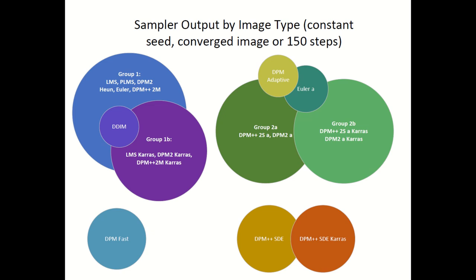DDIM was slightly strange as it could result in either a group 1 or group 1b output. Group 2 is a bit more varied. Group 2a and group 2b are mostly distinct, but can have the same output. Euler A and DPM Adaptive, like DDIM, are wildcards. In roughly equal proportions, Euler A results in a group 2a output, a group 2b output, or a unique output. DPM Adaptive was usually unique, but occasionally matched Euler A or group 2a.